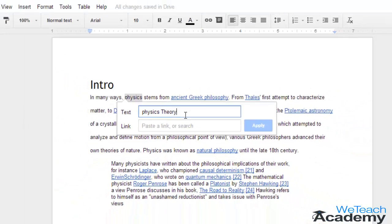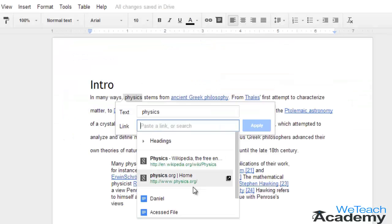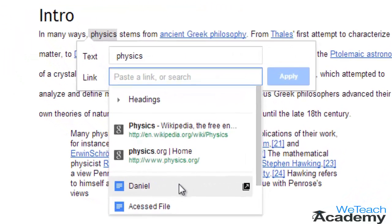Note that if you have linked an image, you cannot add text to that image because the image is directly clickable. The link box will automatically show you a few suggestions. You can pick any of these suggestions.